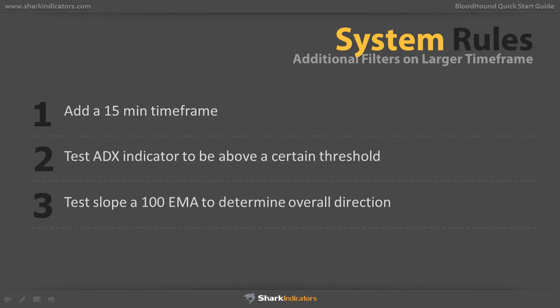When the ADX is above 25, it is said that the market is trending strongly in one direction. But you may want the ability to tinker with this threshold to achieve a result you're satisfied with. With Bloodhound, it's easy to change these values on the fly to instantly see how they will affect your system.